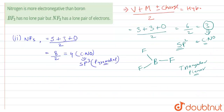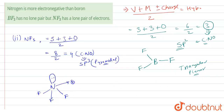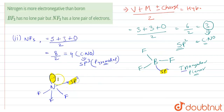In the NF3 structure, nitrogen is at the center with a lone pair, and three fluorine atoms are arranged around it. Because NF3 has a lone pair, it undergoes SP3 hybridization giving a pyramidal shape. BF3 has no lone pair, so it undergoes SP2 hybridization giving a triangular planar shape. The correct reason is the lone pair.